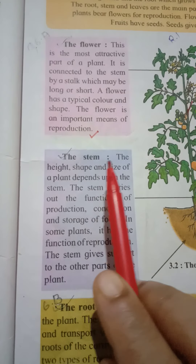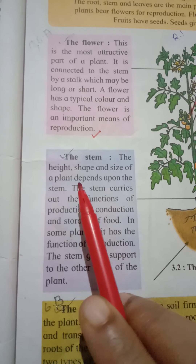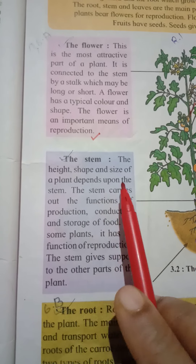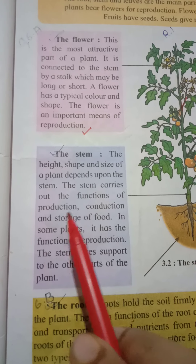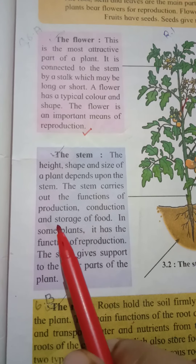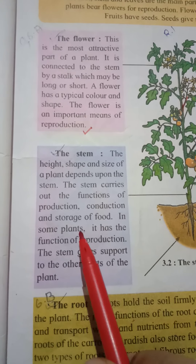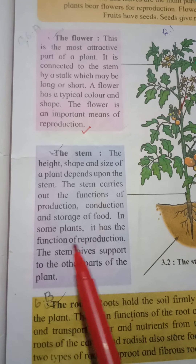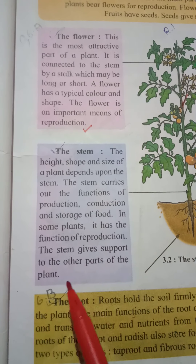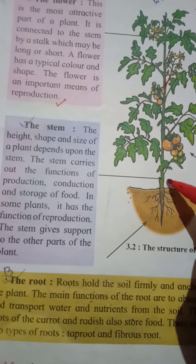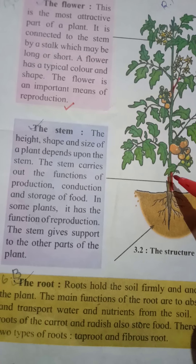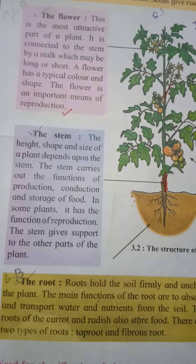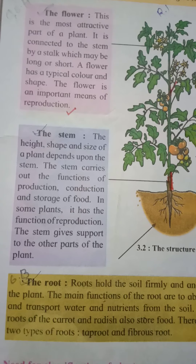Next, the stem. The height, shape and size of a plant depends upon the stem. The stem carries out the functions of production, conduction and storage of food. In some plants, it also has the function of reproduction. The stem gives support to the other parts of the plant — the flowers, the leaves, and the fruits are all attached to this stem.